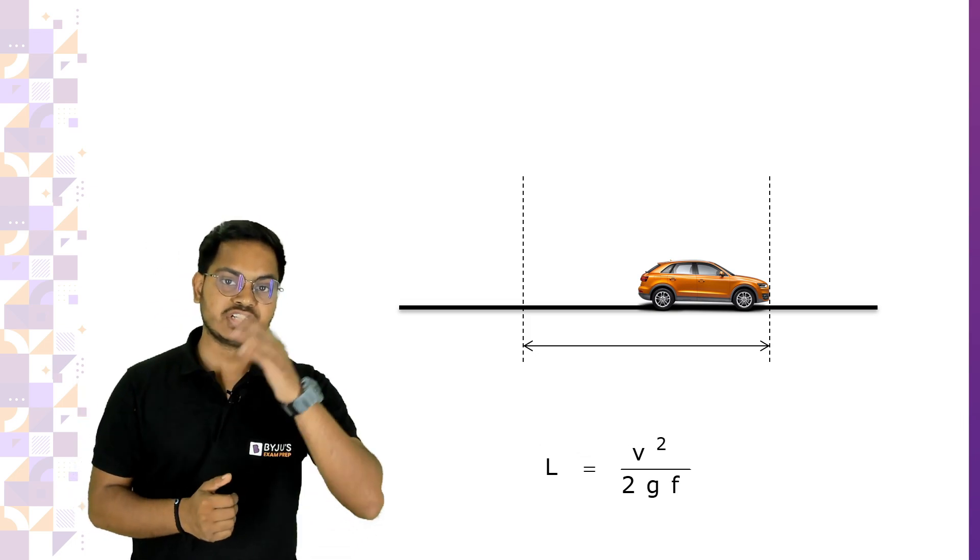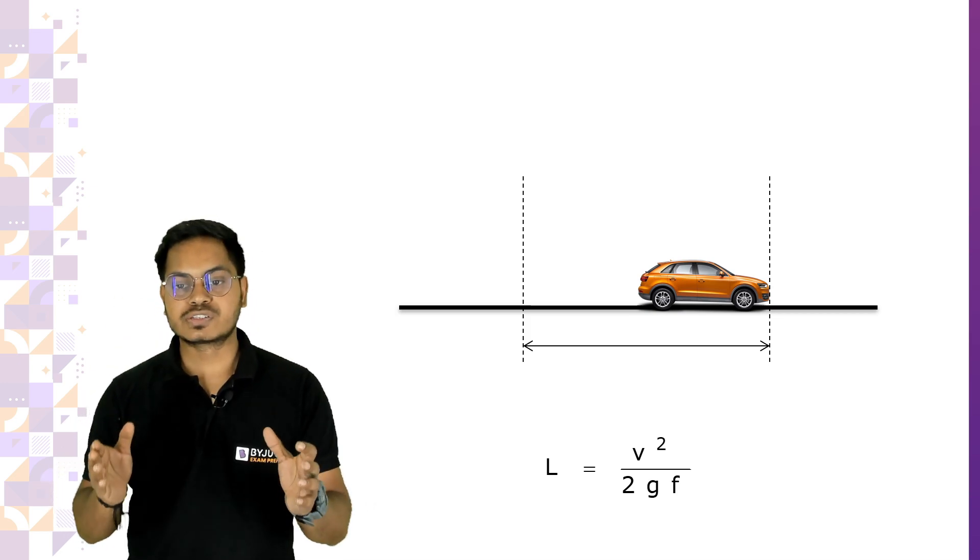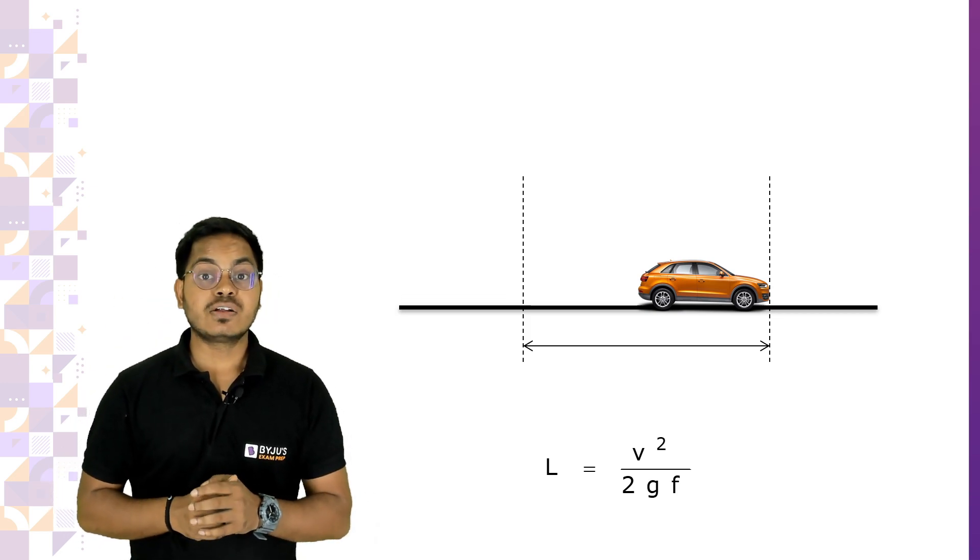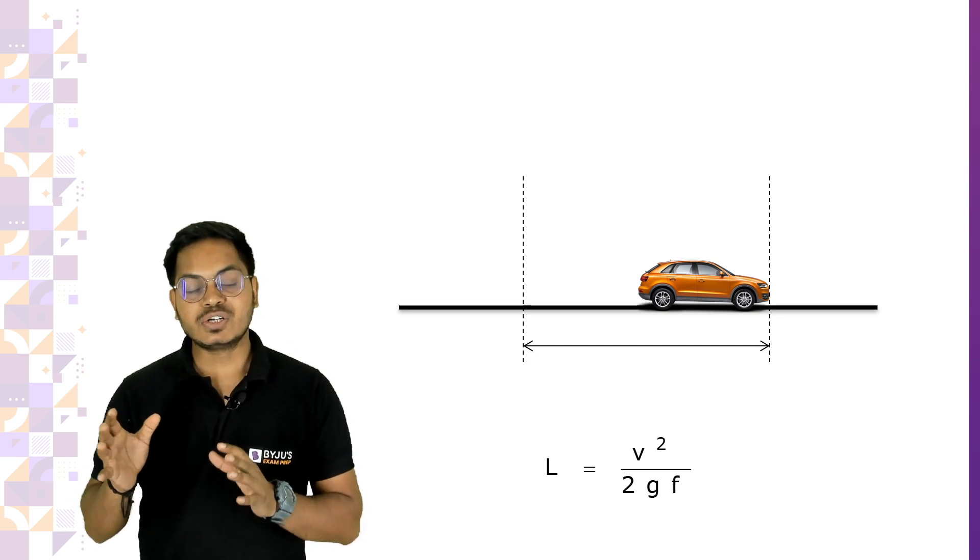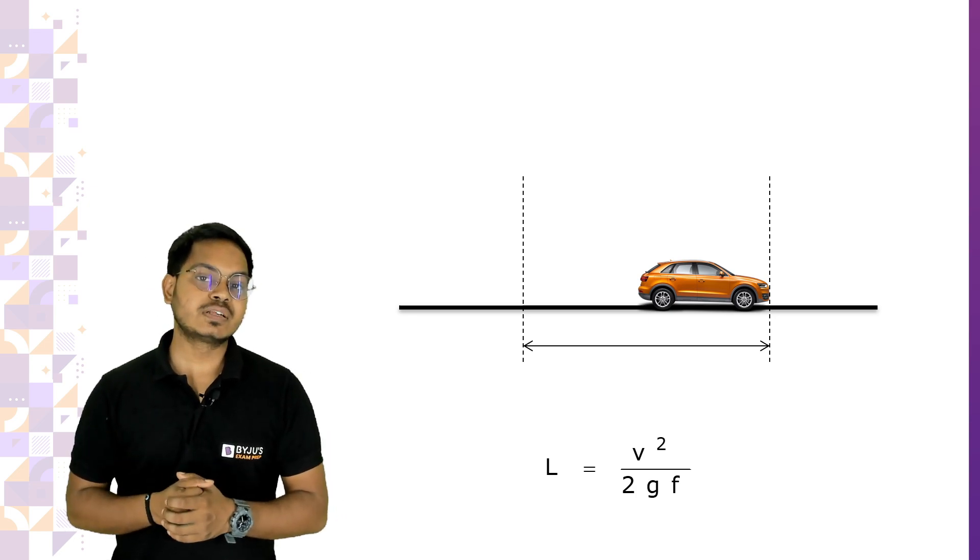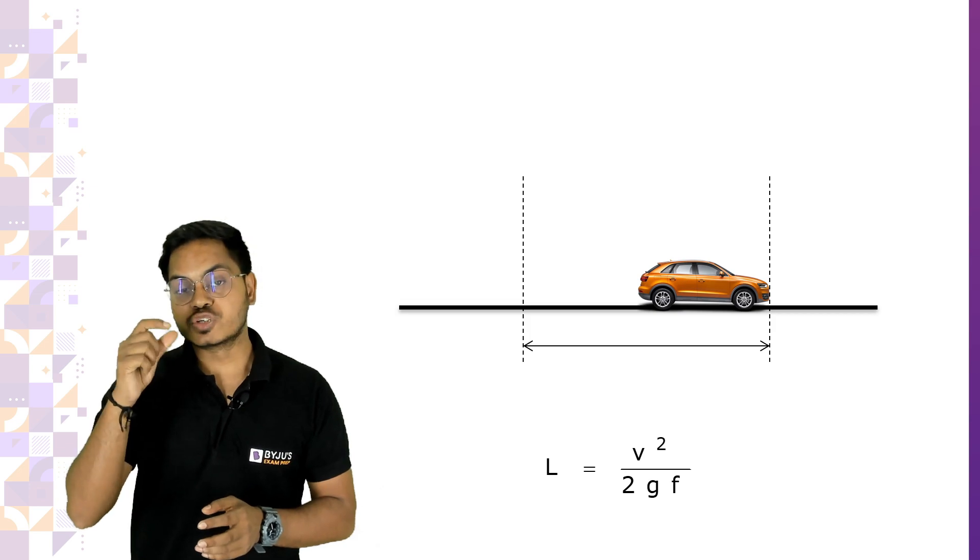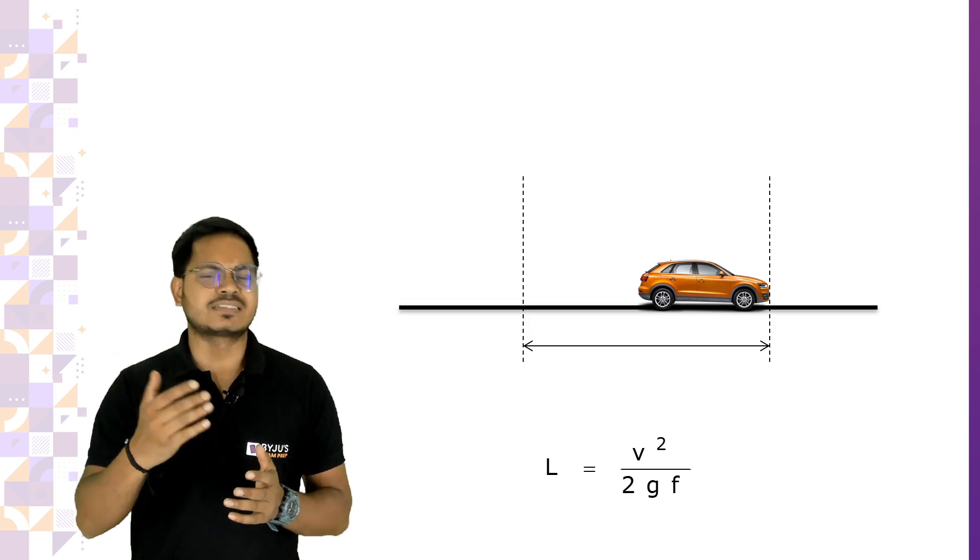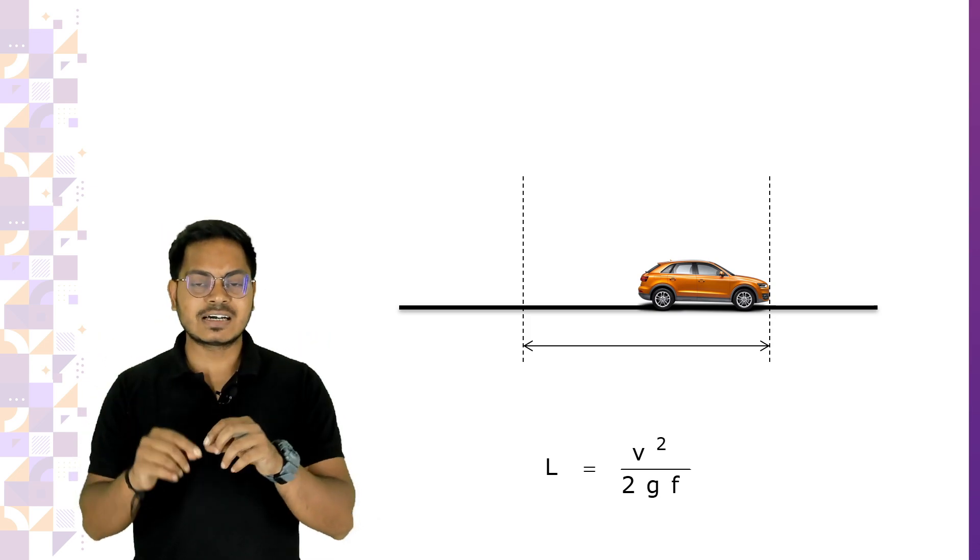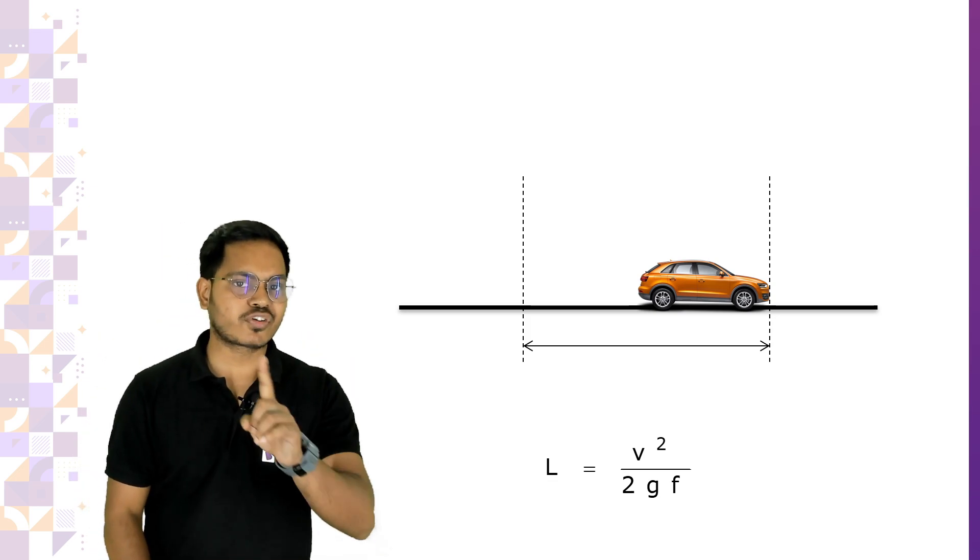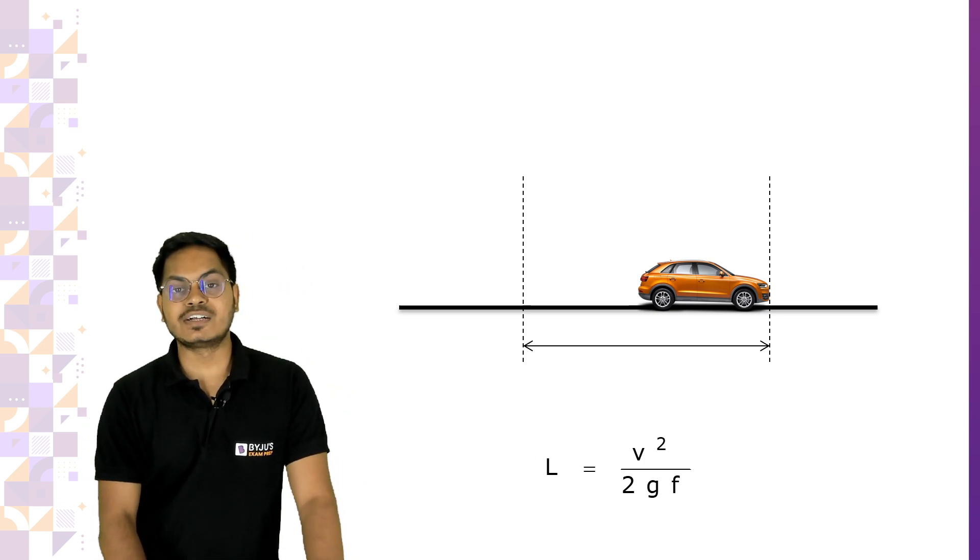What is the change in energy? Initially the energy was half mv square, finally it is zero because the vehicle is at rest. Work done is going to be displacement into the force. Force will be the frictional force, the coefficient of friction into the normal reaction, which is the weight of the vehicle, into the displacement, which is the braking distance. From there, we get the relationship of braking distance as V square by 2GF.